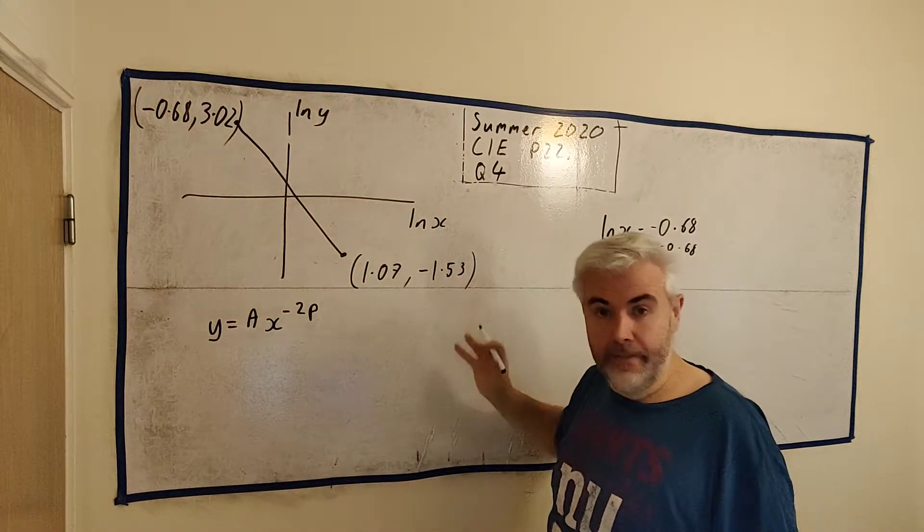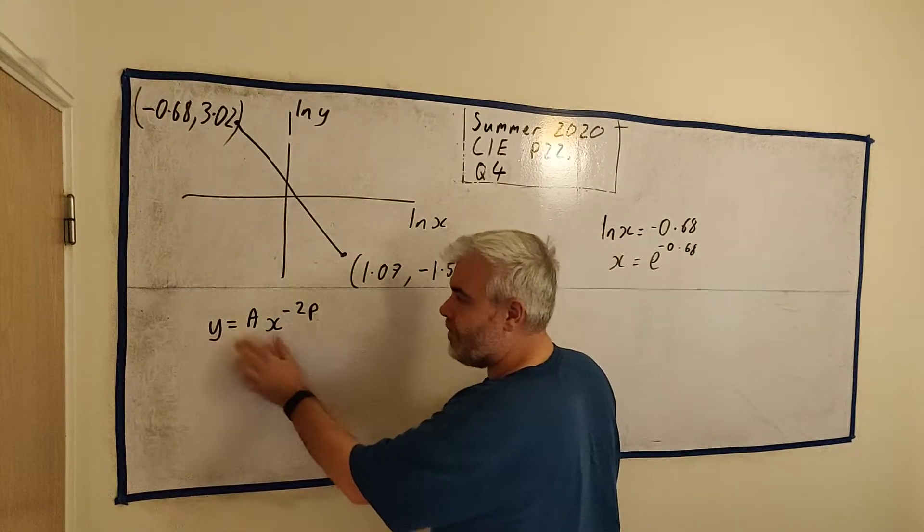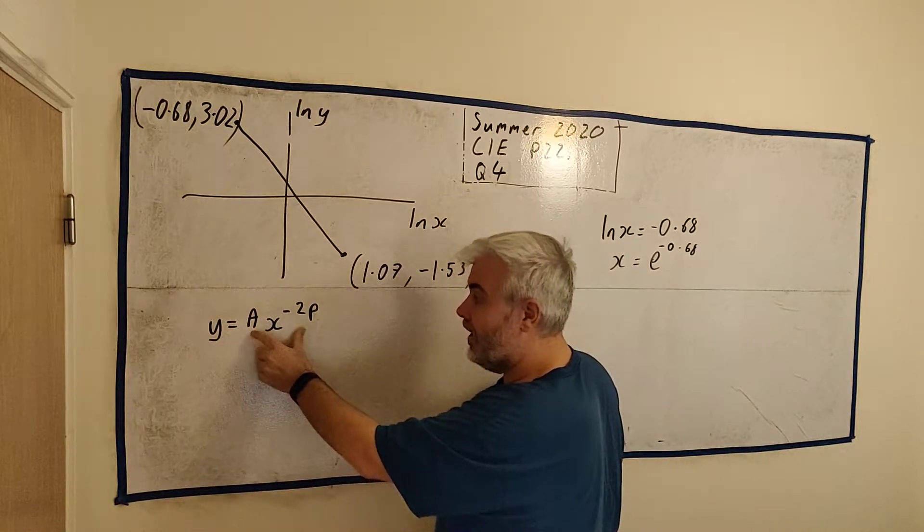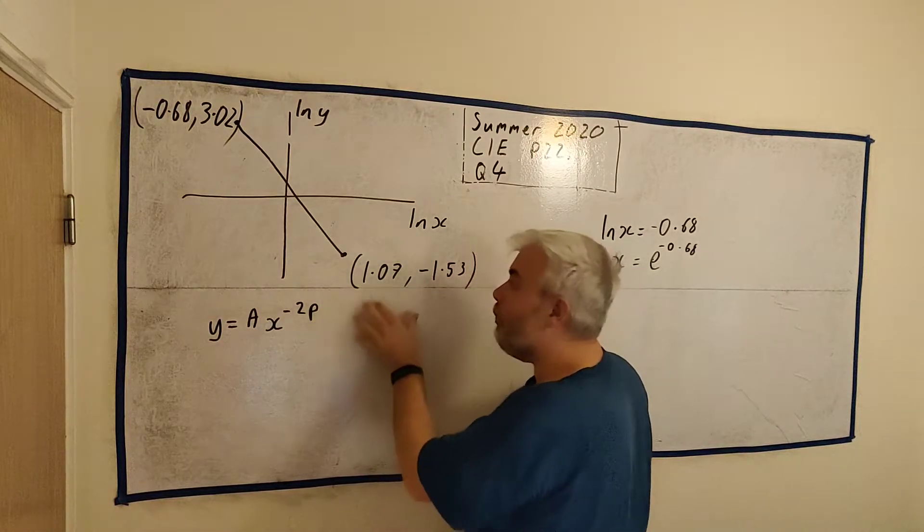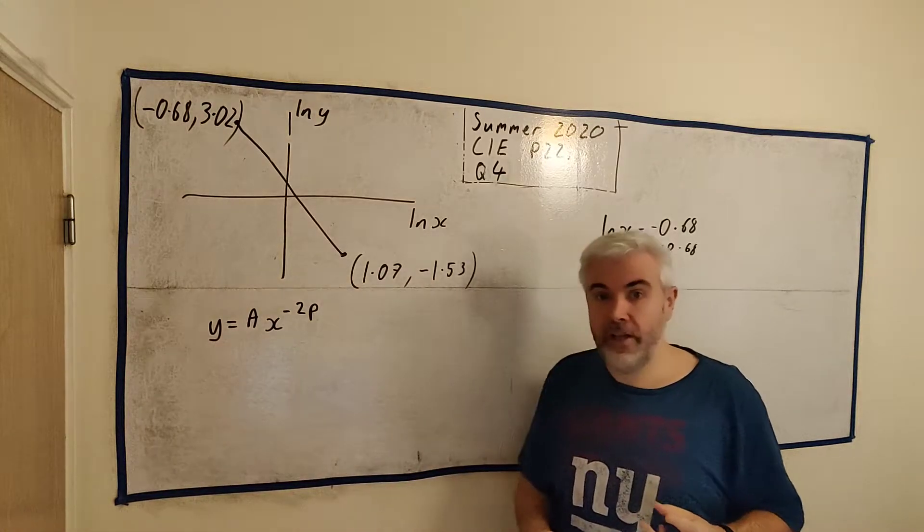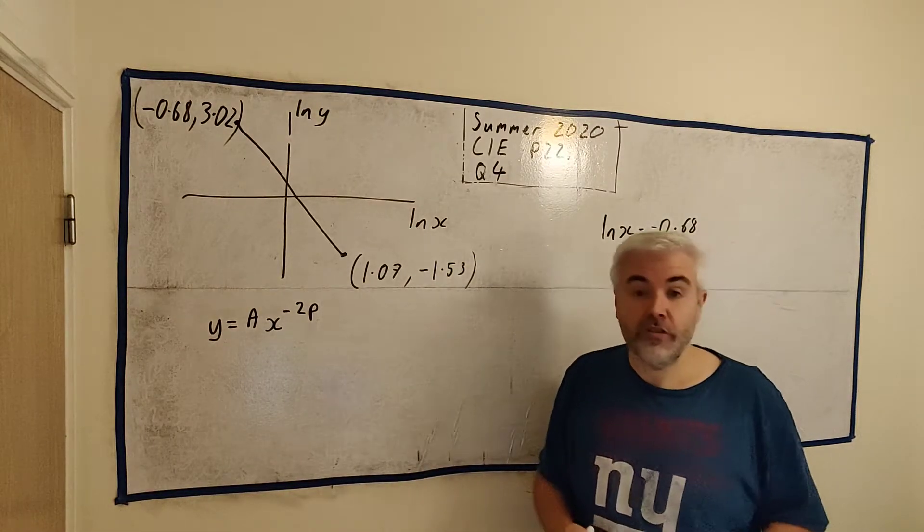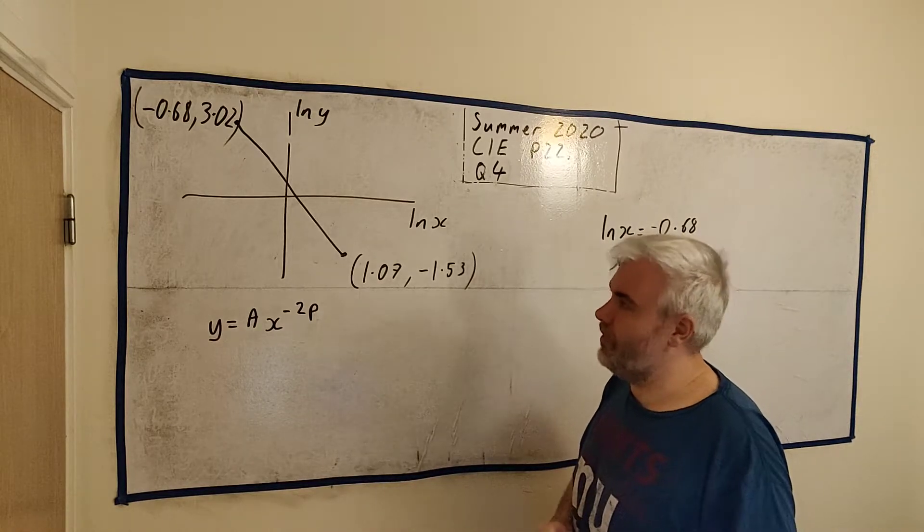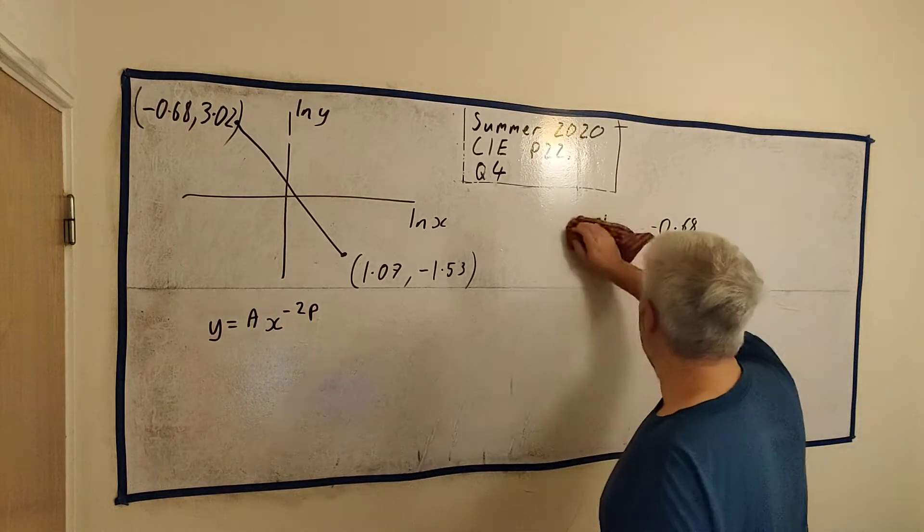So basically they told us what x is and they told us what y is. We could just put in x and y, get an equation in A and P, and then we do it again. Get another equation in A and P. That's two equations with two unknowns. So that is a simultaneous equation. That's one way to solve this question. But I'm not going to use that way.